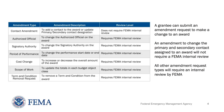The types of amendment requests that will require a FEMA internal review are: changes to the assigned authorized official or the signatory authority, changes to the period of performance dates for the award, changes to the budget total or changes to the scope of work, and lastly, changes to have a term condition removed from the award.